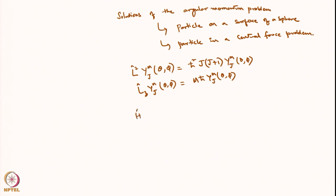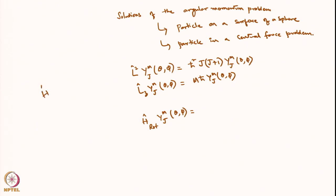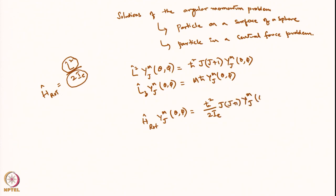Using these results, H_rotation acting on Y_jm(θ,φ) equals (L²/2Ie) acting on Y_jm, which equals ℏ²/2Ie · j(j+1) · Y_jm(θ,φ).